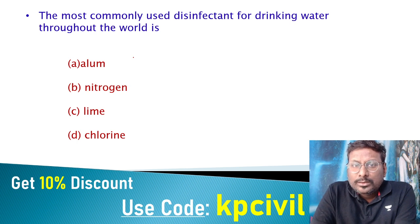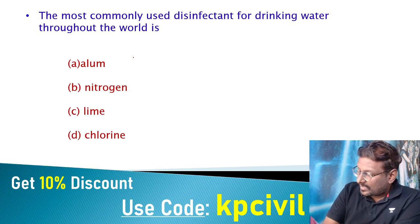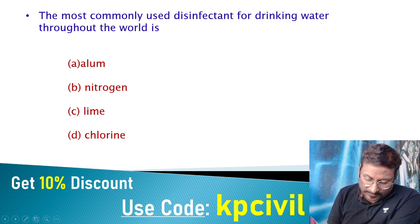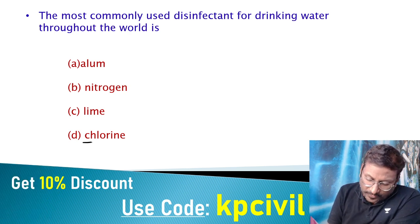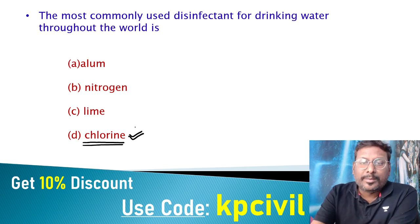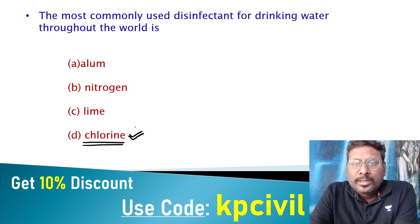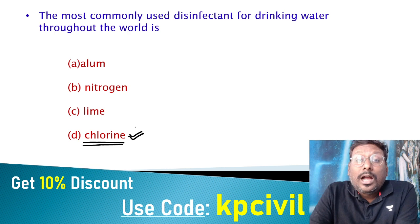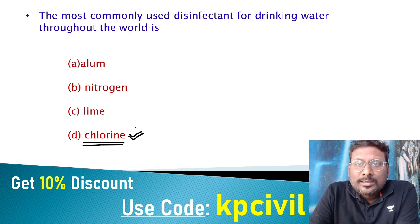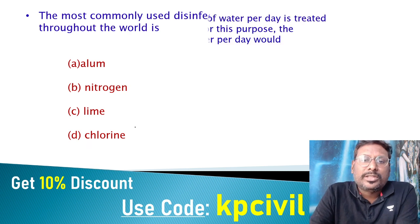Chlorine is the universal disinfectant because it is most economical, highly efficient, and shows residual action. Residual action will prevent future contamination.